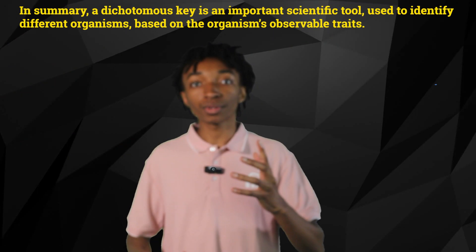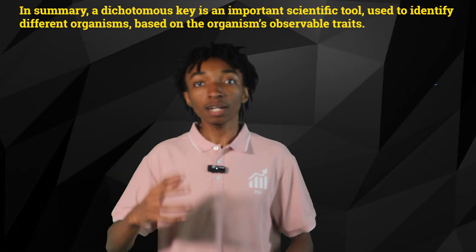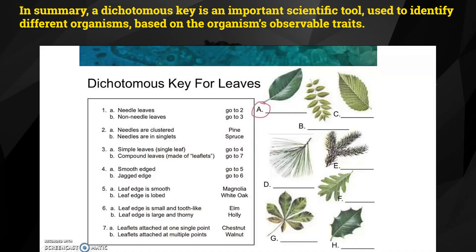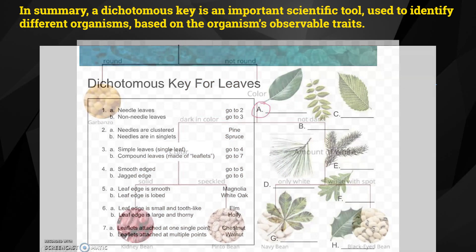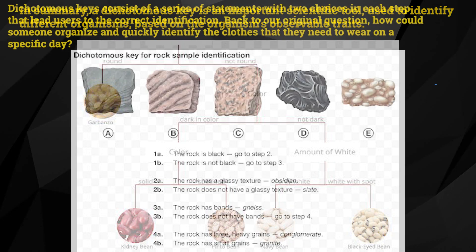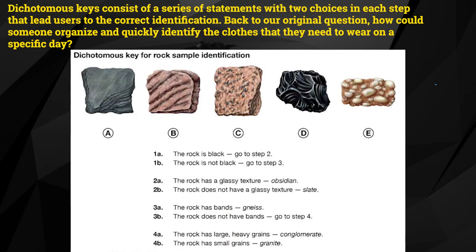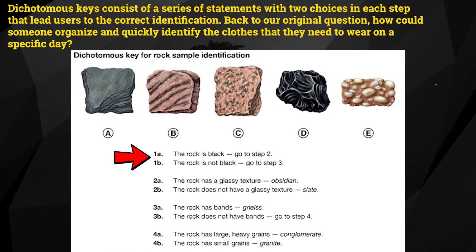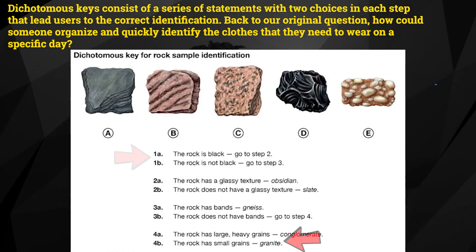In summary, a dichotomous key is an important scientific tool used to identify different organisms based on the organism's observable traits. Dichotomous keys consist of a series of statements with two choices in each step that lead users to the correct identification.